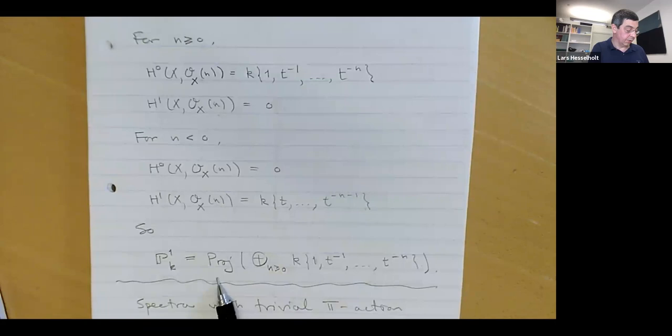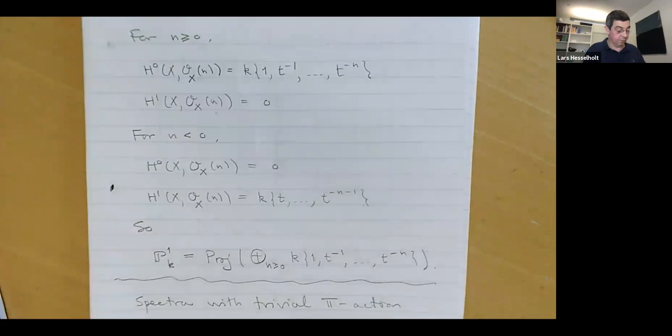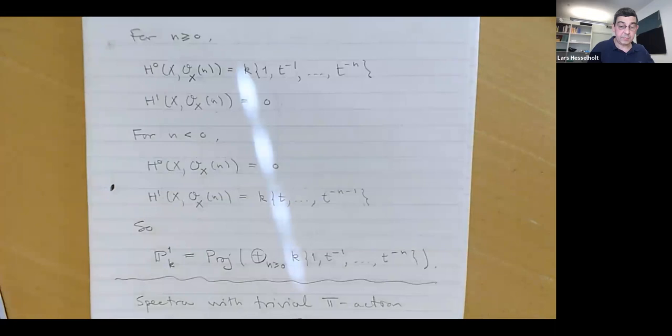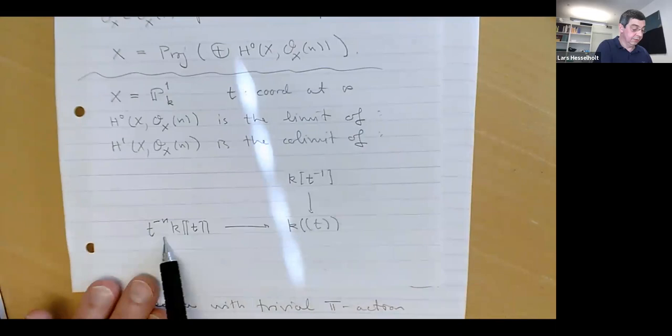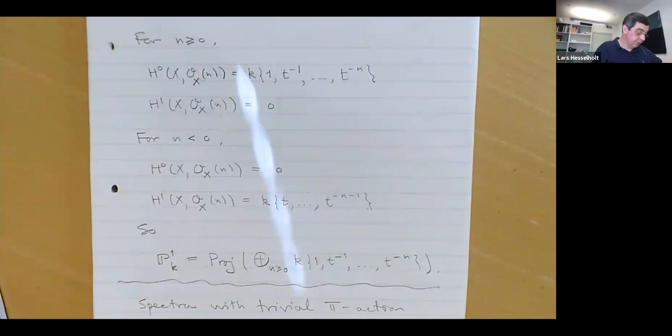P1 is part of this graded ring. We can write this graded ring in many different ways; here I've made a non-canonical choice of a coordinate at infinity, and then it takes this form. Now next, I want to explain how these terms here appear from spectra with a trivial circle action.